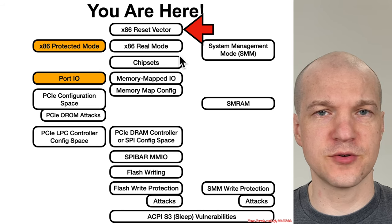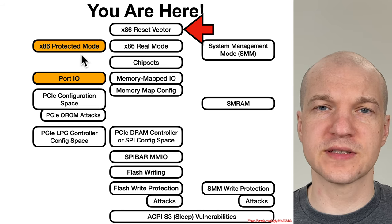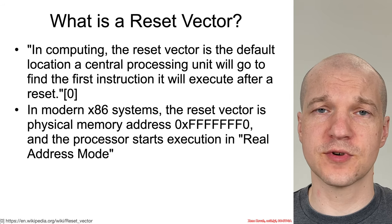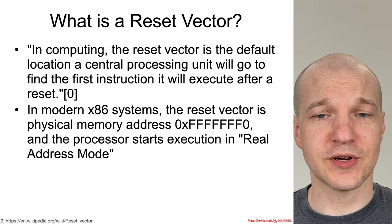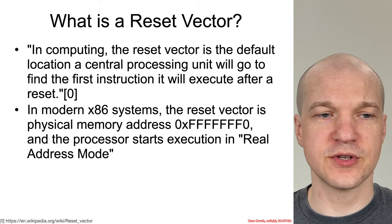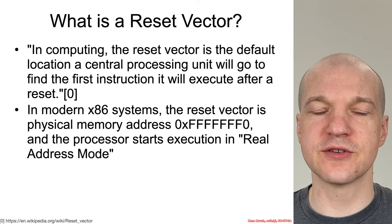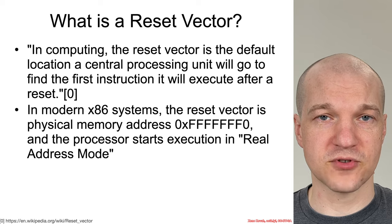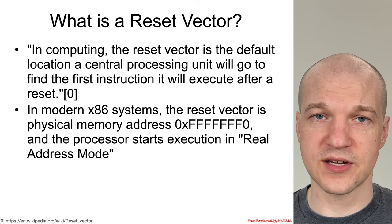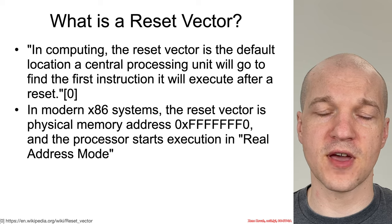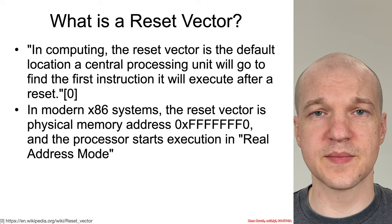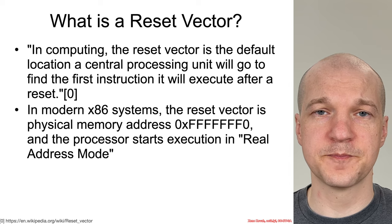We're going to learn about real mode — we've already learned about protected mode in Architecture 2001. So what is a reset vector? According to Wikipedia, in computing a reset vector is the default location a central processing unit will go to to find the first instruction it will execute after a reset. After a reset on x86 hardware, the address it goes to is FFFFFFF0 — seven Fs and a zero — which is basically four gigabytes minus 16 bytes.